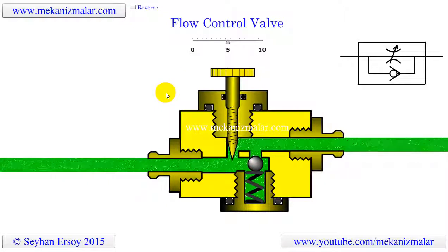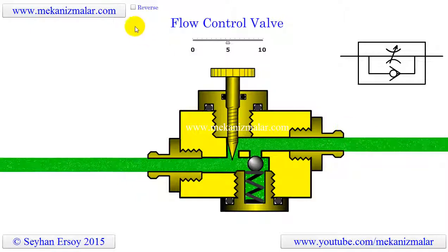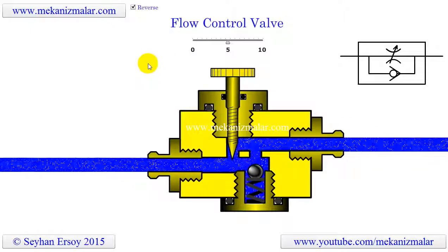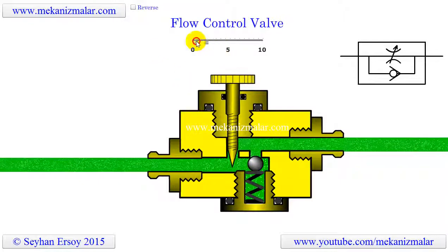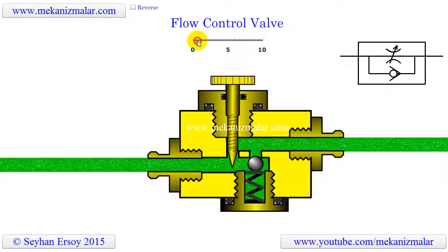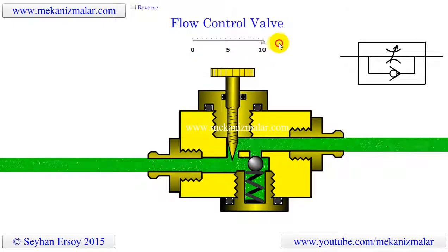In this animation, the high pressure flow going toward the cylinder is shown with green color, and the low pressure return flow is shown with blue color. By changing the needle position we can change the flow rate going toward the cylinder. This way the forward speed of the piston of a cylinder can be fine-tuned.